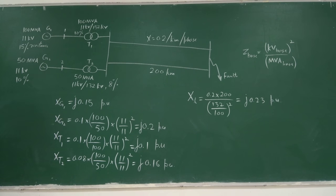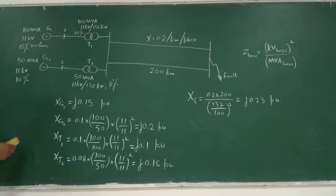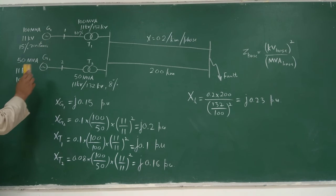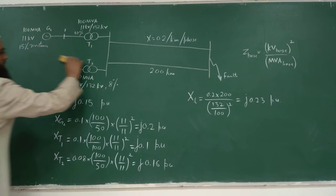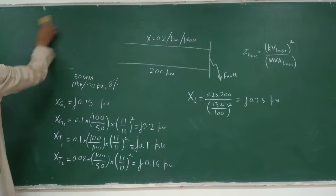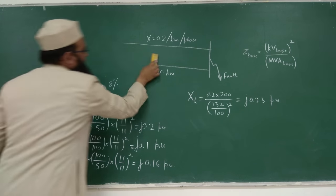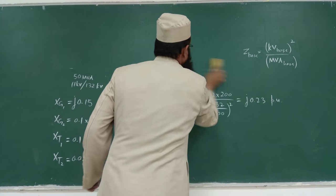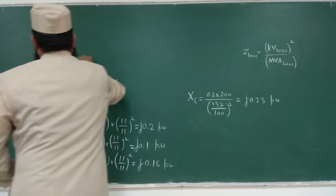Step three: draw the single line reactance diagram. With all per unit reactances evaluated — X_G1 = j0.15, X_G2 = j0.2, X_T1 = j0.1, X_T2 = j0.16, and each transmission line = j0.23 — we draw the single line reactance diagram on a per phase basis.